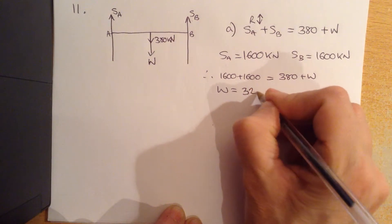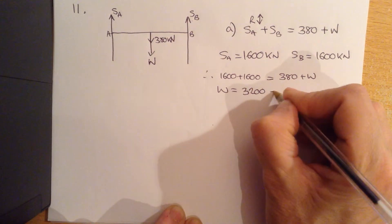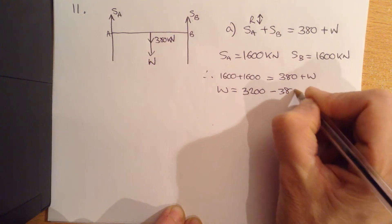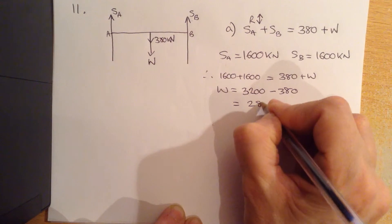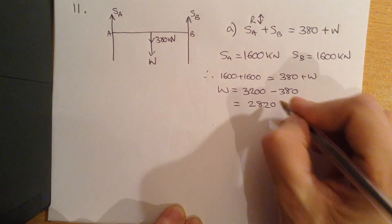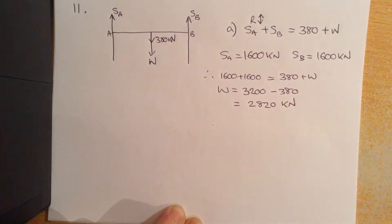So 1600 plus 1600 is 3200 minus 380, which equals 2820 kilonewtons.